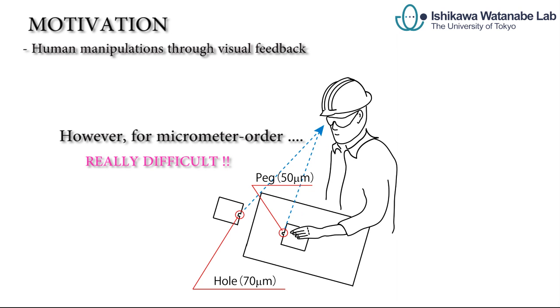However, due to poor visual acuity, it becomes difficult for humans to accurately perform micron order manipulation.